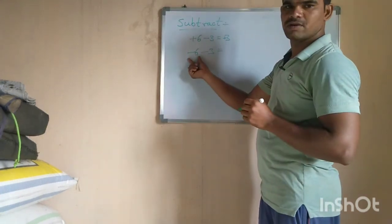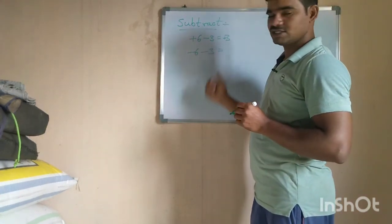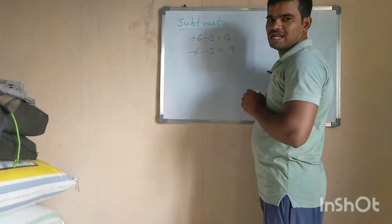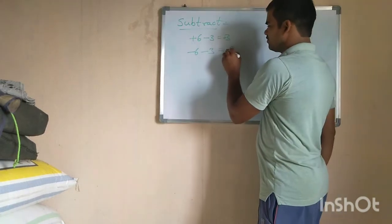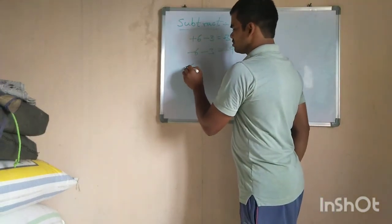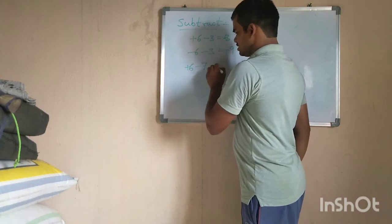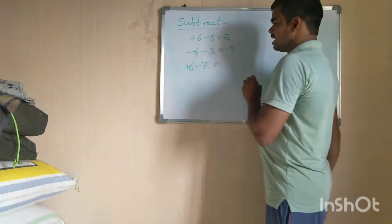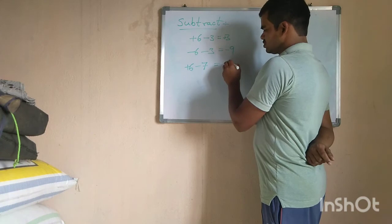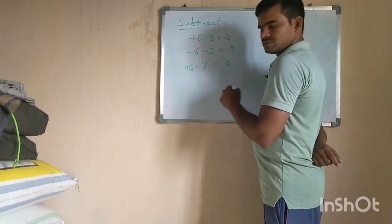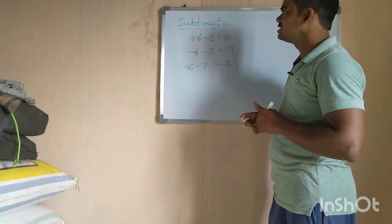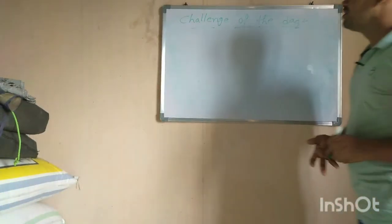Now subtract minus 6 and minus 3. Both signs are the same, so just add the values: 6 plus 3 equals 9, and carry the negative sign — so the answer is minus 9. Next, 6 minus 7: opposite signs, so subtract the values — 7 minus 6 equals 1. Seven is the greater value and its sign is negative, so the answer is minus 1. That covers subtraction.